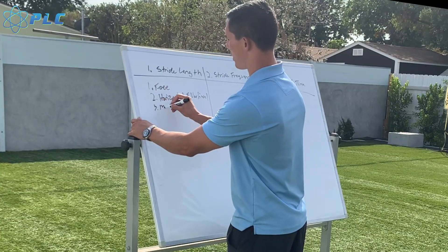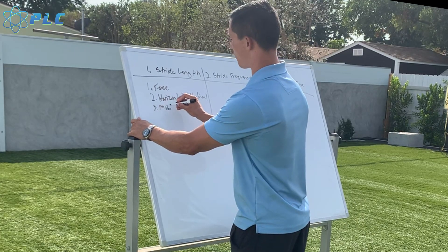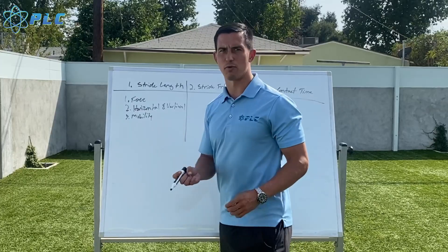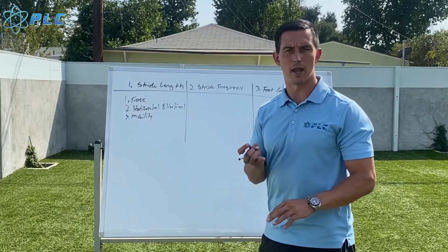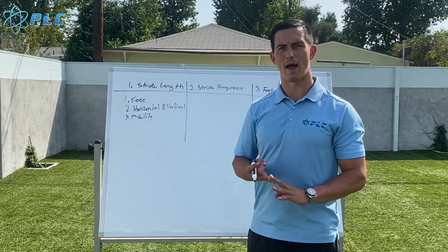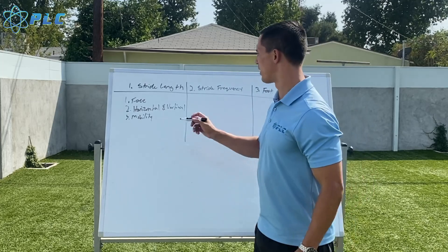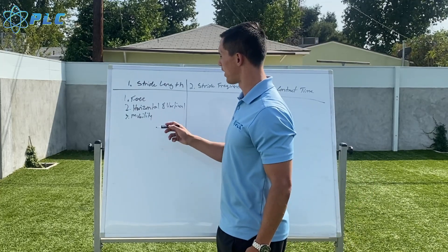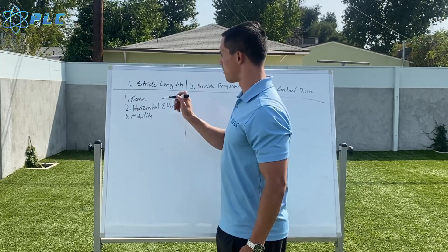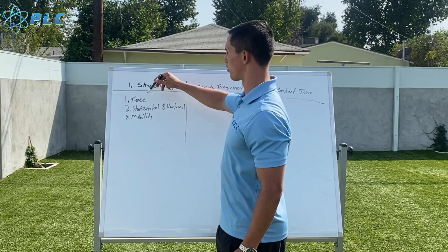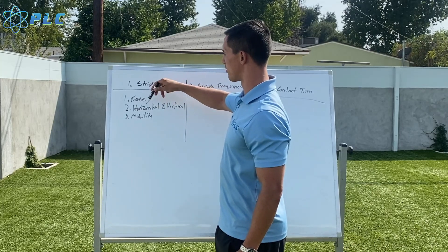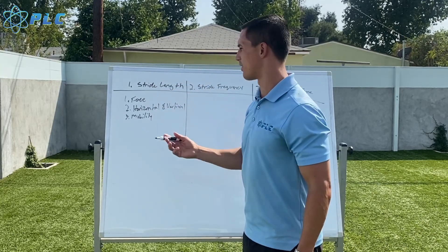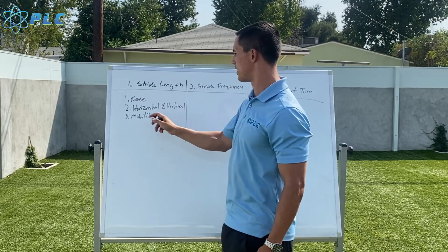You really want to be able to create both horizontal and vertical forces to maximize stride length. Another big thing is going to be overall mobility. If you're really stiff within your hips or within your lower back, that will also impact your ability to maximize your stride length. But the biggest thing is how much force you're creating into the ground during your foot contact, with mobility being the secondary factor.